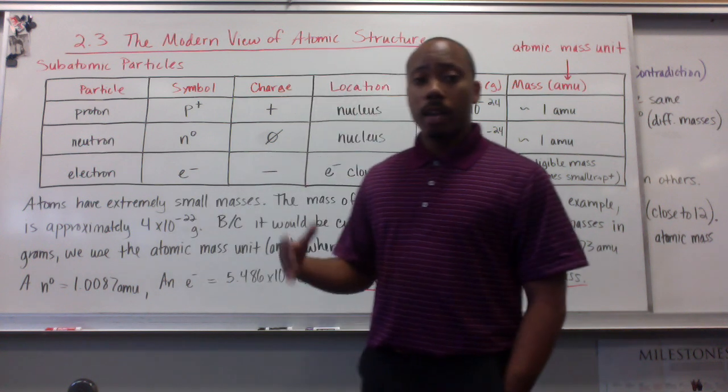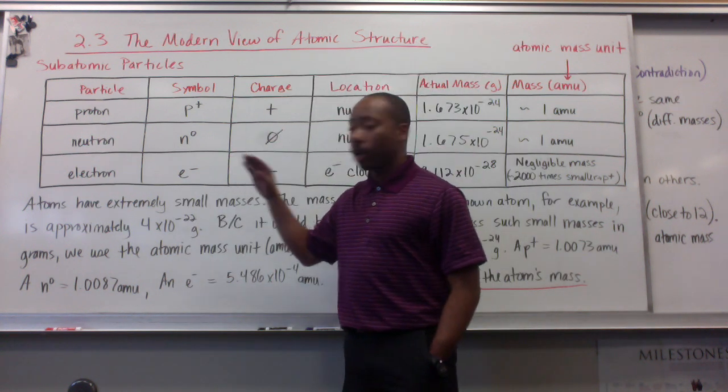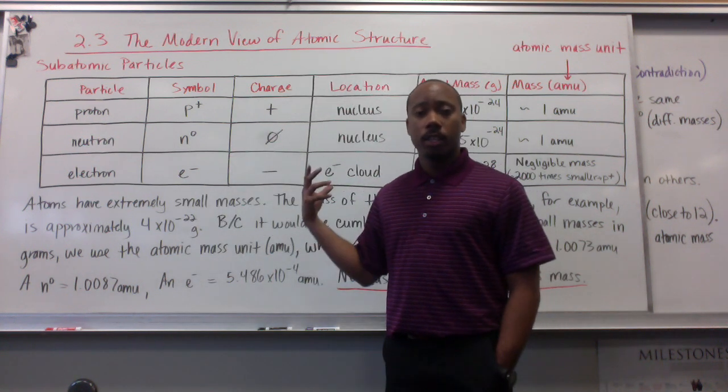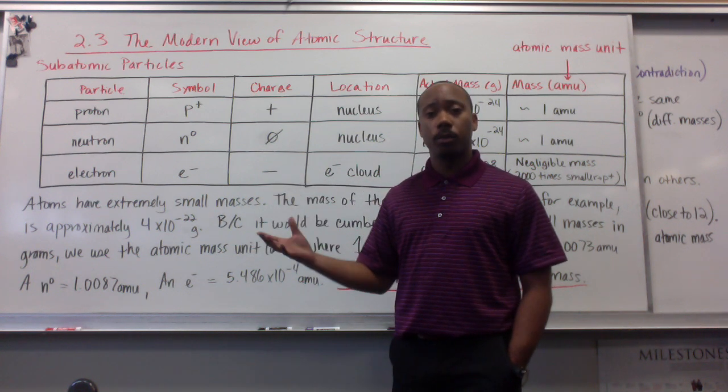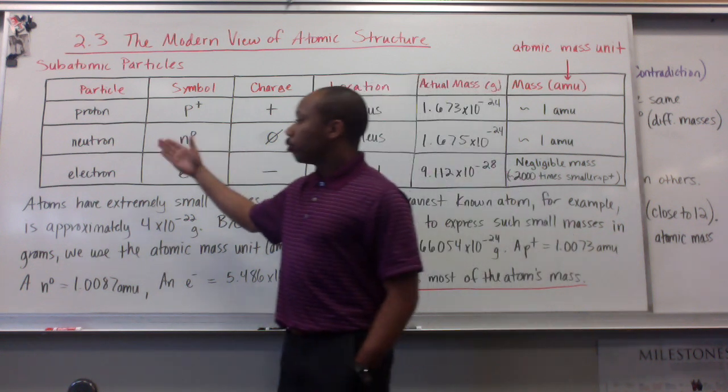And the particles that we outlined were protons, neutrons, and electrons. And here's a chart just going through some of the particulars of these subatomic particles. So let's go through them together. So we have protons, neutrons, and electrons.